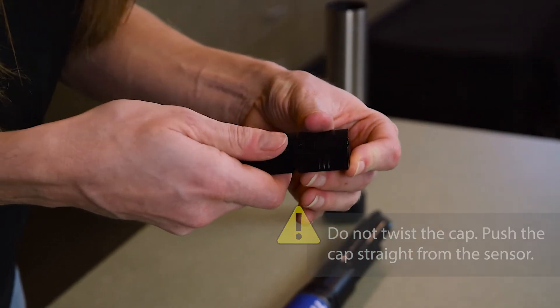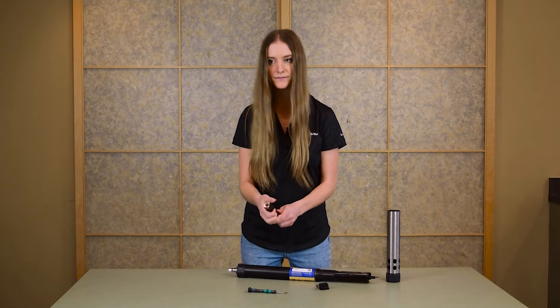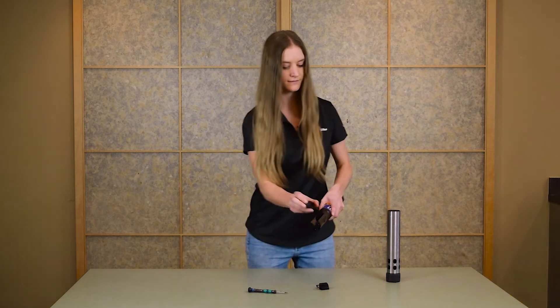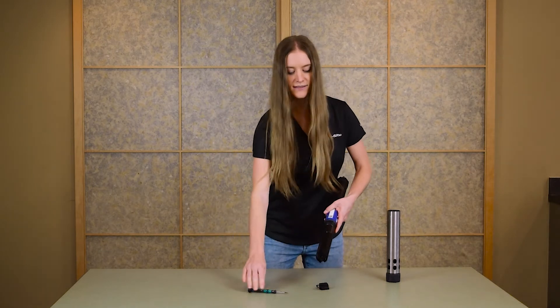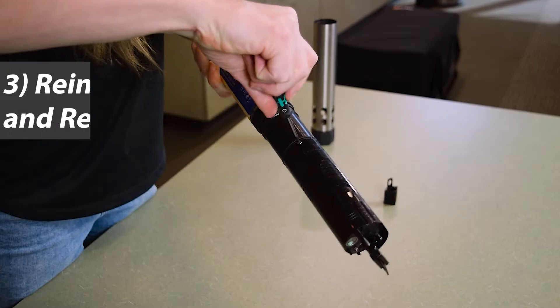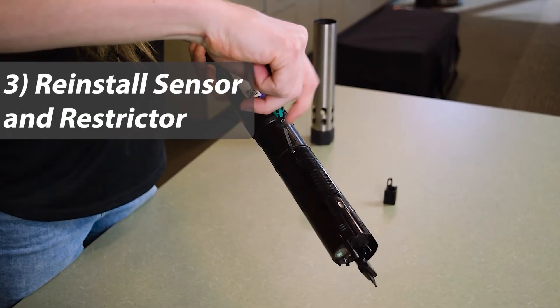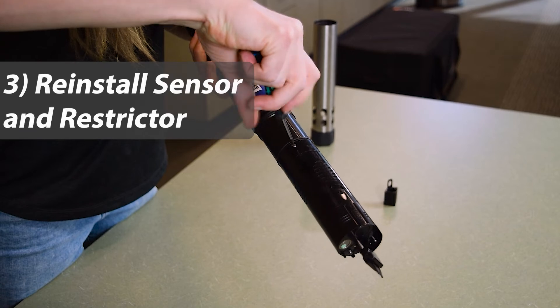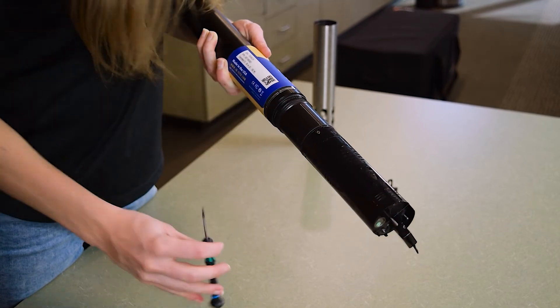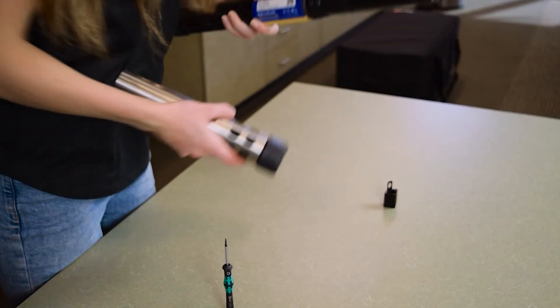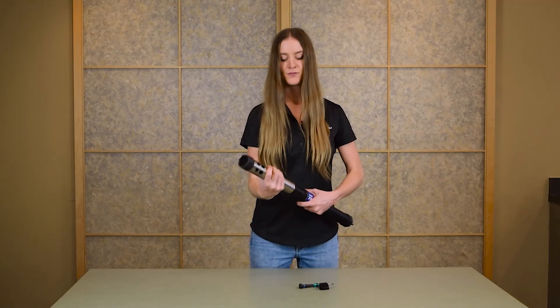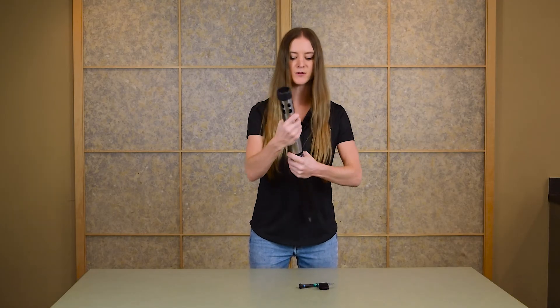Then you're ready to slide the new cap back onto the sensor. Install the sensor back in the instrument and tighten the sensor set screw. Reinstall the restrictor and you're ready to deploy it in the field.